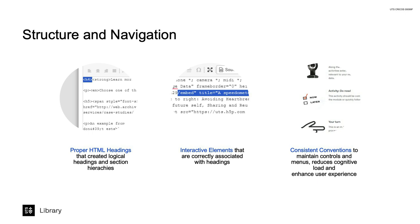Previous headings did not create meaningful landmarks for assistive technologies. These were replaced with HTML tags that created logical headings and section hierarchies, including headers, main sections, and footers to delineate different parts of the page. Interactive elements were correctly associated with headings, improving navigation and context.